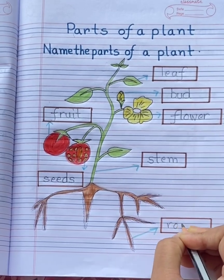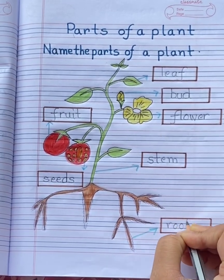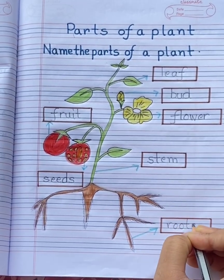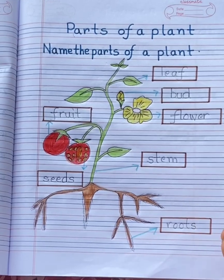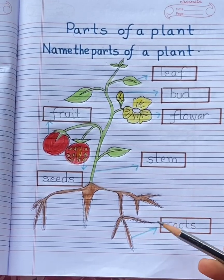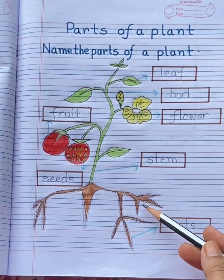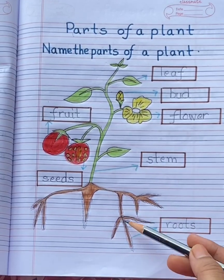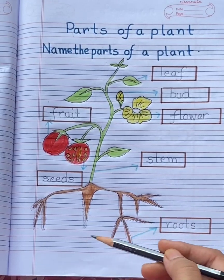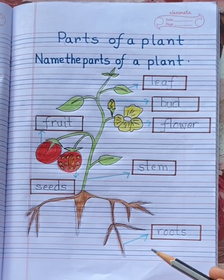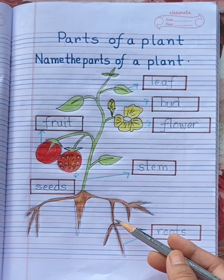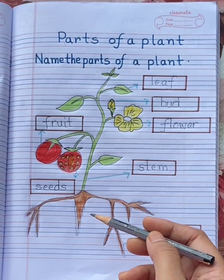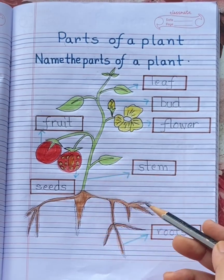These are roots. R-O-O-T-S, roots. Roots absorb water from the soil. Roots fix the plant to the ground.